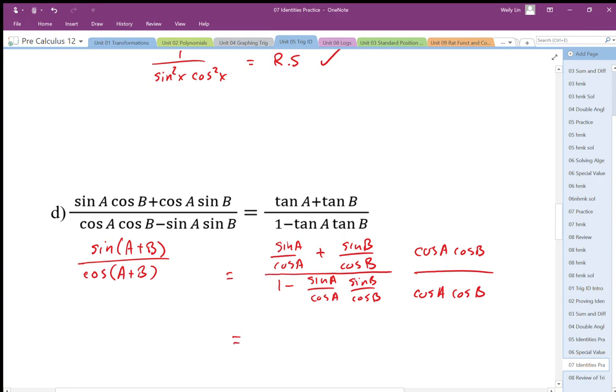So those will cancel out, so what we end up with is, those cos a's cancel, so we end up with sine a cos b, and that's going to cancel out the denominator, plus cos b's cancel, so we end up with sine b cos a. If I multiply this out, I'm left with the denominator cancels out, cos a cos b minus sine a sine b.